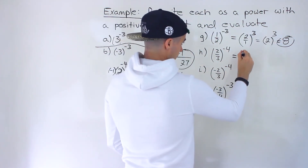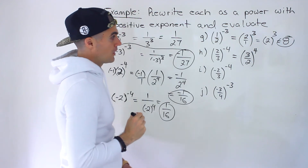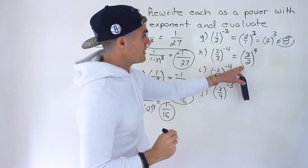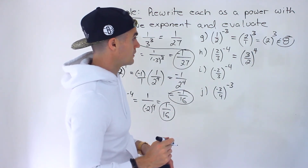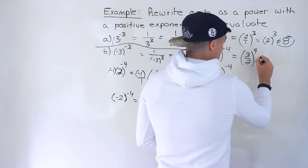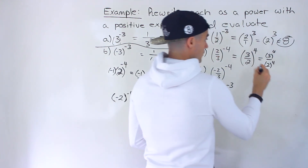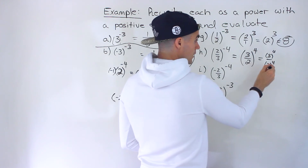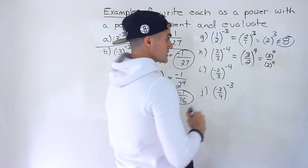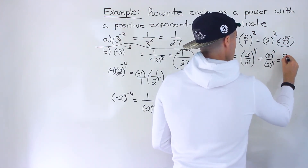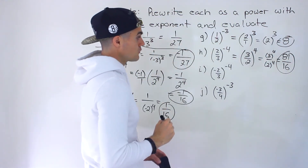For part h, same process — flip the fraction and change the exponent to positive. You can verify these are the same value using a calculator. To evaluate, take the numerator to that exponent and the denominator to that exponent. Make sure to put the entire numerator and denominator in brackets, especially when negatives are involved. 3 to the power of 4 gives 81, and 2 to the power of 4 gives 16, so the answer for part h is 81 over 16.